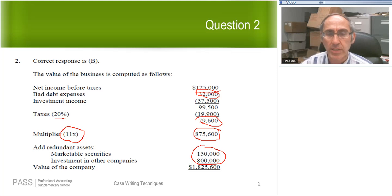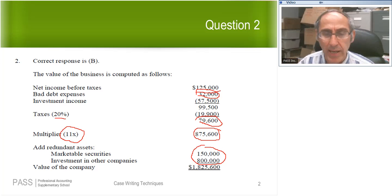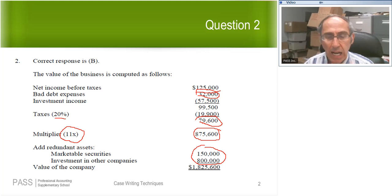There's no way on an exam that they would expect you to be able to figure how much cash they really need to run their business and how much is excess. That would go well beyond the scope of what you're expected to understand, and they'd also have to give you a lot more information, even if you did have the expertise. So unless they're telling you that some of the cash is excess cash, you would never be expected to say they only need so much cash, the rest is excess and therefore redundant. They would not expect you to be able to do that. Does anybody have any questions on question number two?